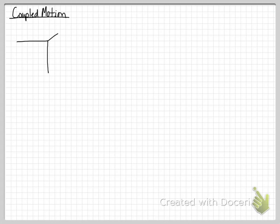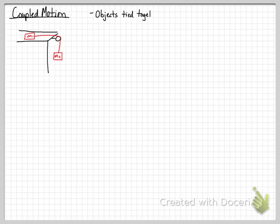Now we're going to move on to coupled motion, where things are put together by strings or are touching — the two objects are coupled together. We have a three-dimensional table with a mass sitting on top, called mass one, attached to a rope going over a frictionless, negligible-mass pulley, attached to a mass two hanging down. Objects tied together will have the exact same acceleration.